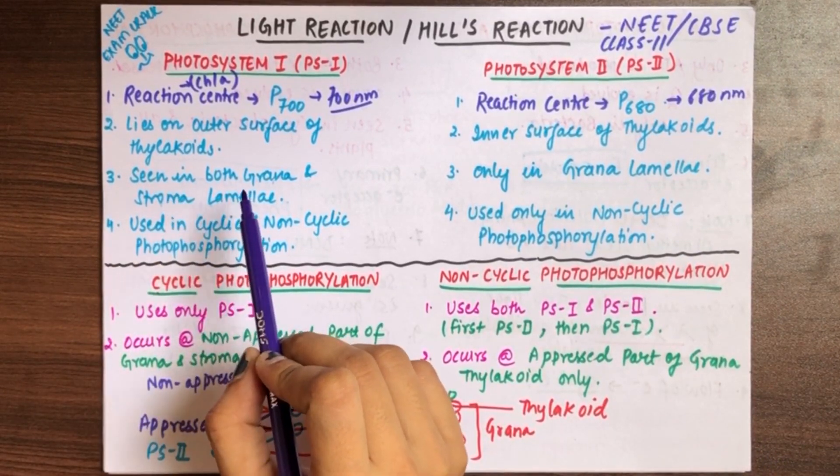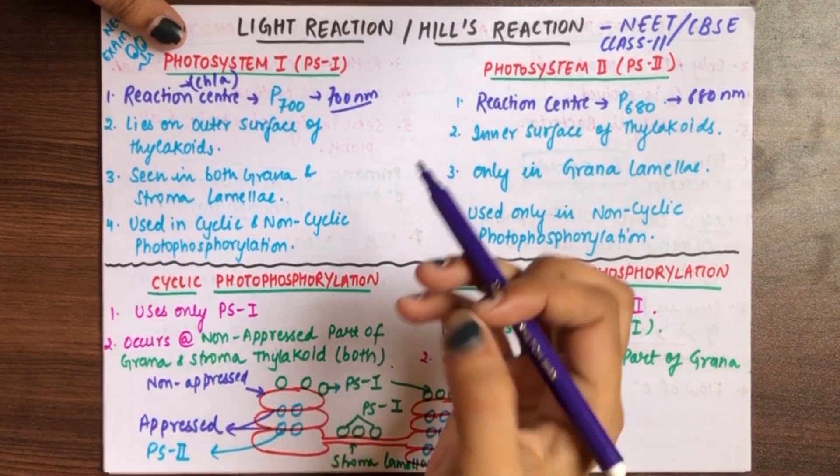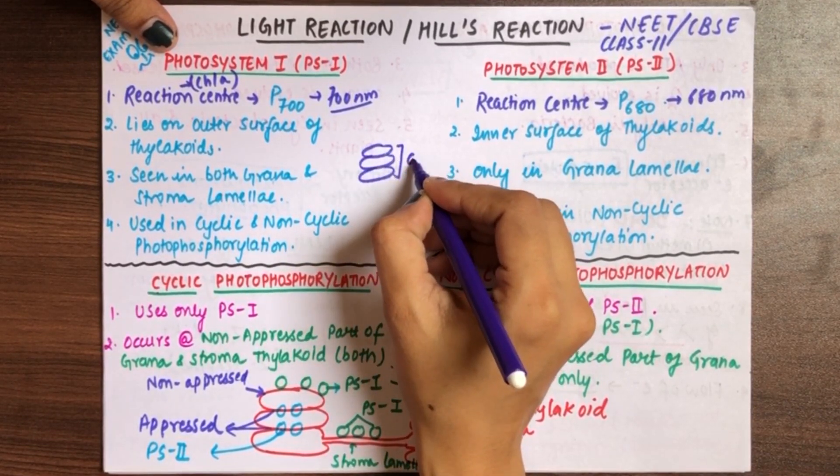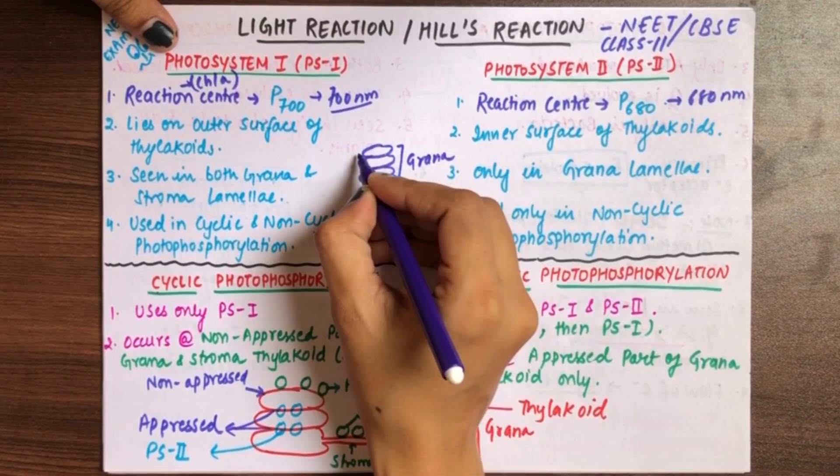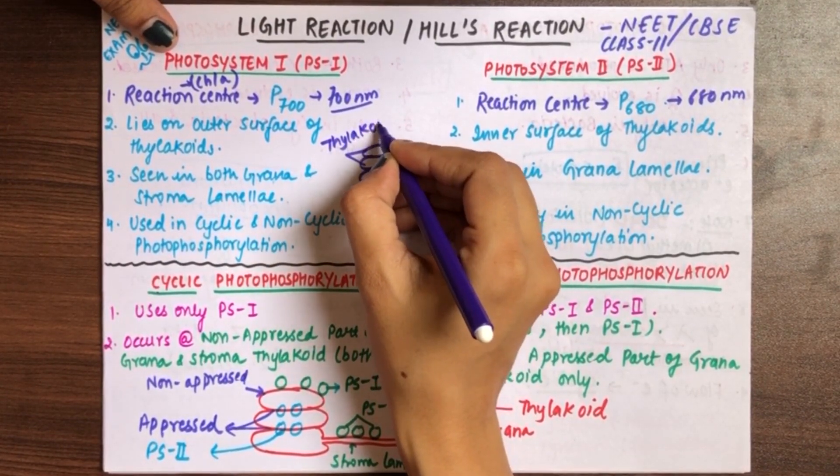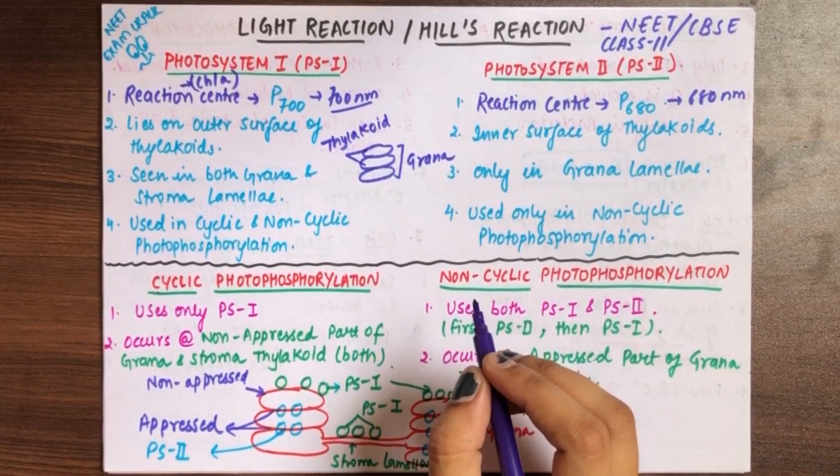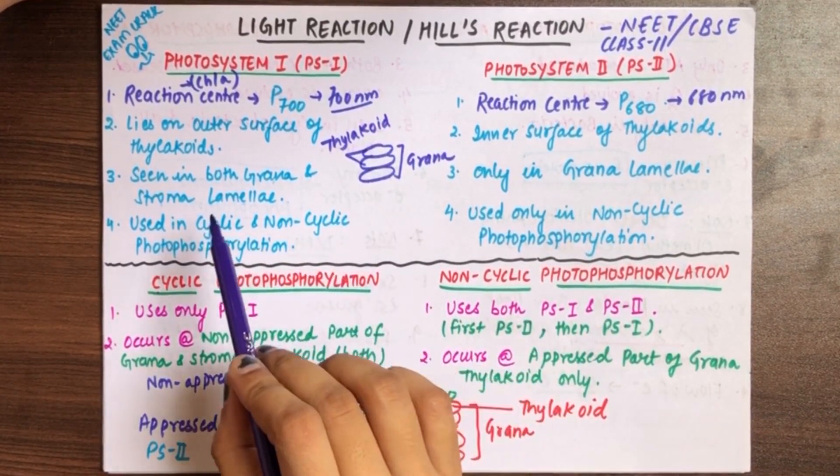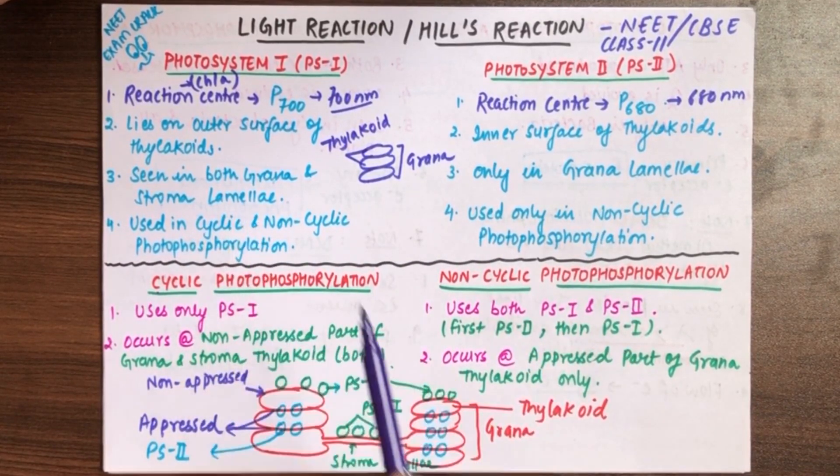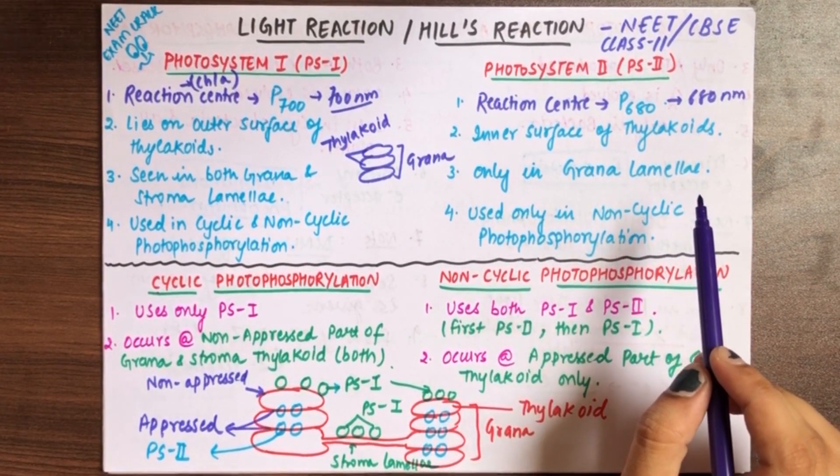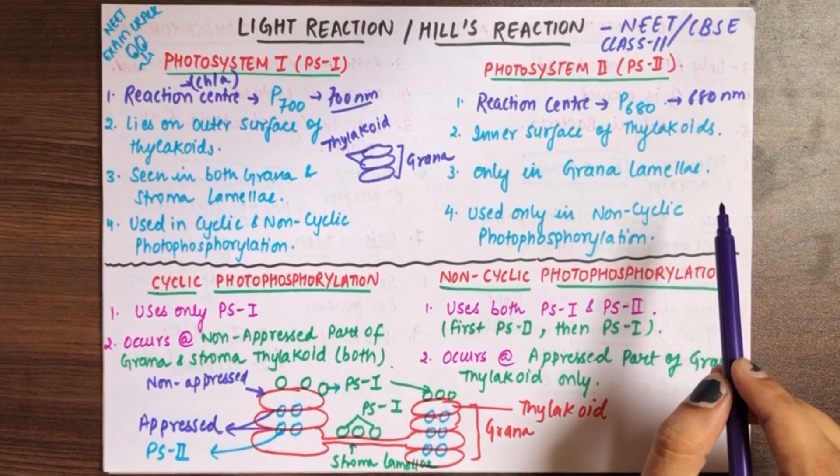Next, photosystem 1 can be seen in both grana and stroma lamellis. When thylakoids are stacked over one another like a pile of coins, we call it grana. And this is where you find photosystem 2, that is in grana lamellis.